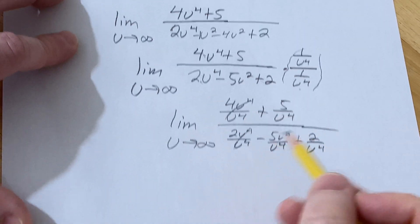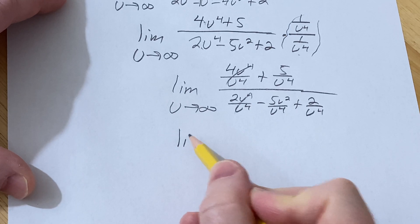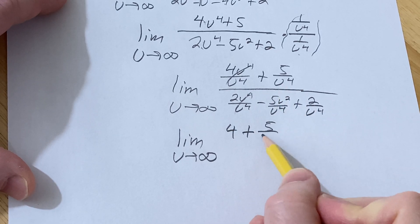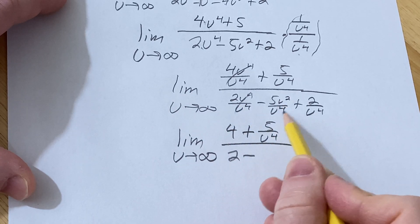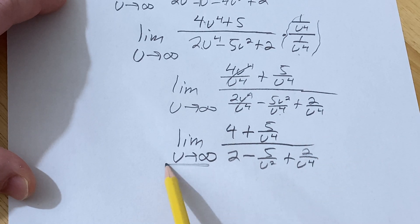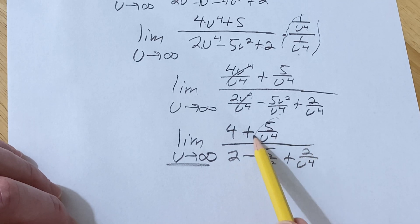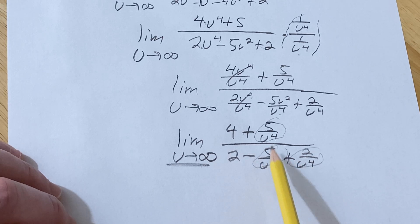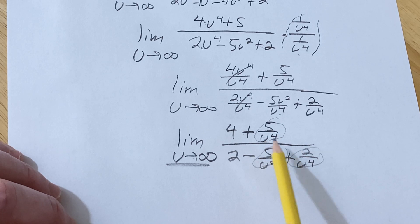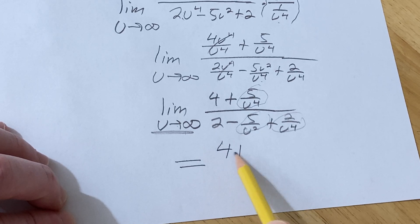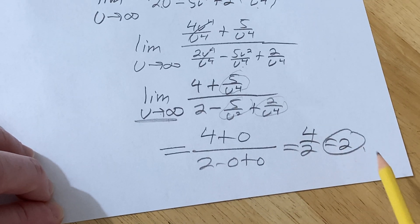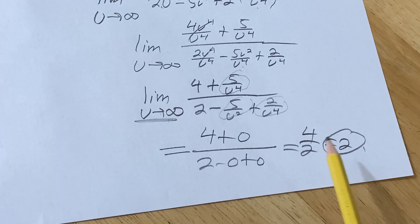Cleaning this up, we have 4 in the numerator, and in the denominator: 2 minus 5 over u squared plus 2 over u to the 4th. As u approaches infinity, each of those fractions gets smaller and smaller because the denominator is growing, so each fraction approaches 0. Dropping the limit sign, we get 4 plus 0 over 2 minus 0 plus 0, which is 4 over 2, equal to 2 — the same answer we knew from the beginning.